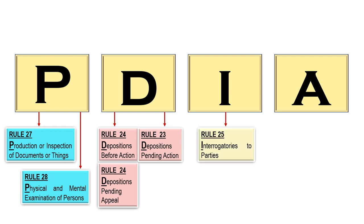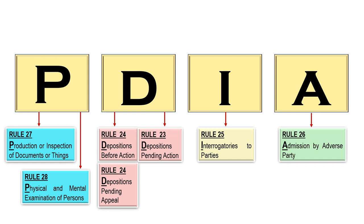How about letter I? Letter I is Rule 25 — interrogatories to parties. And last is letter A, Rule 26 — admission by adverse parties. So this is how we are going to discuss the modes of discovery: PIDEA.